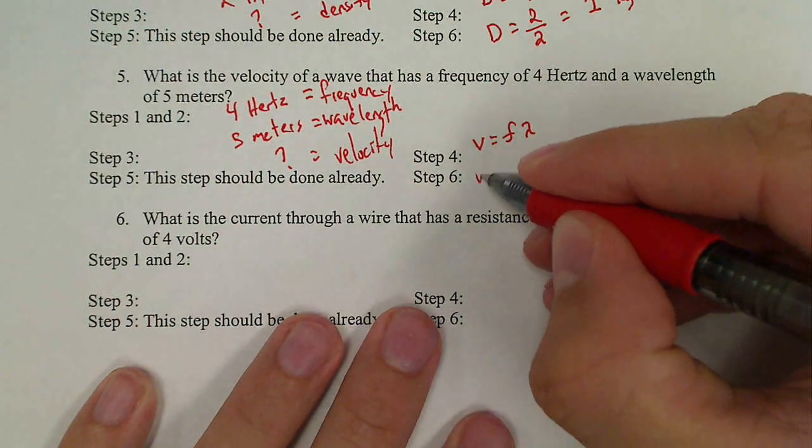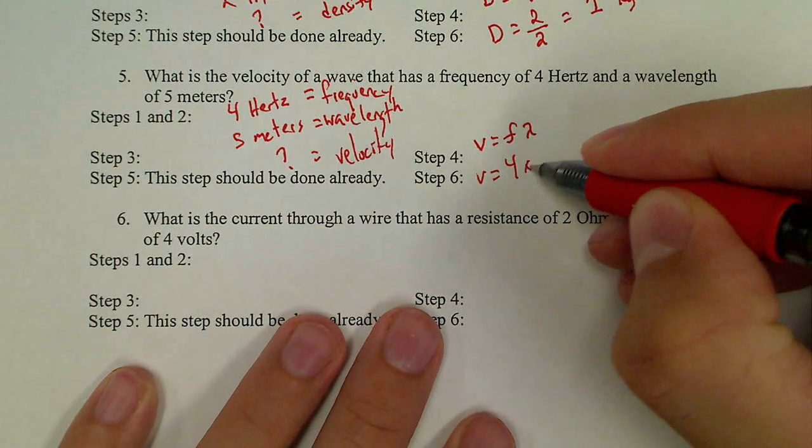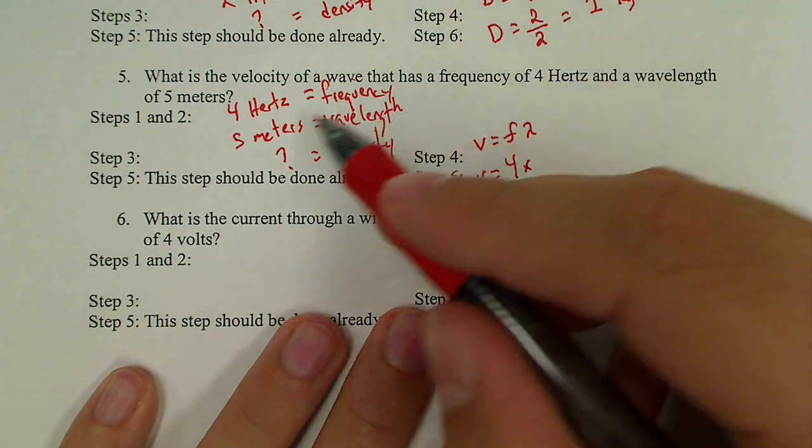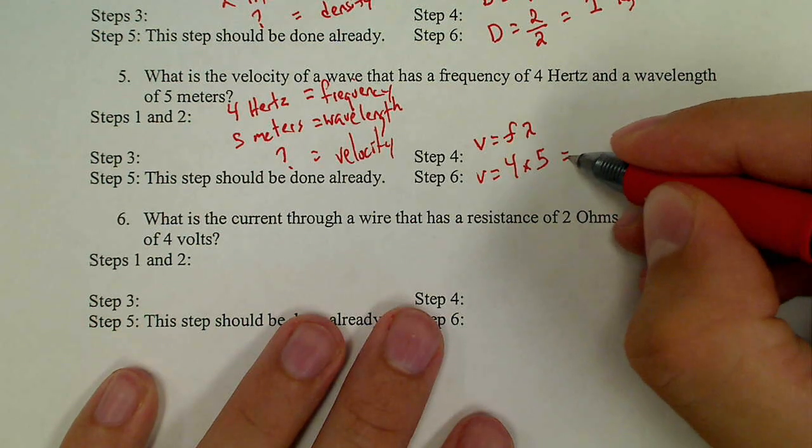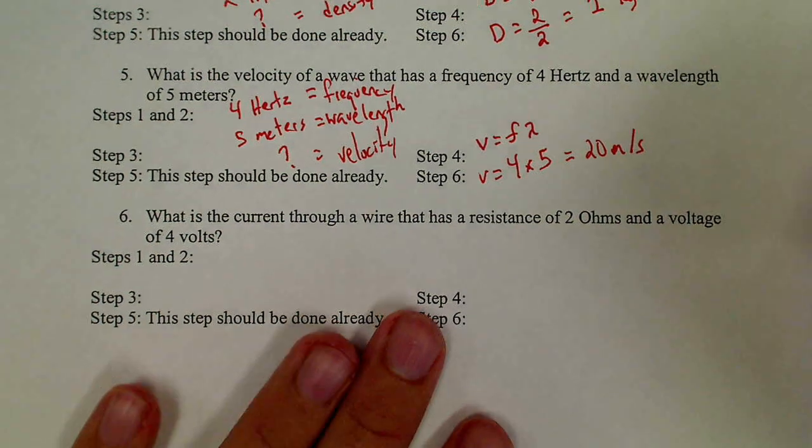My velocity is what I'm looking for. F for frequency, that's 4. Lambda for wavelength, that's 5. Velocity equals 4 times 5, that is 20. My units are meters per second.